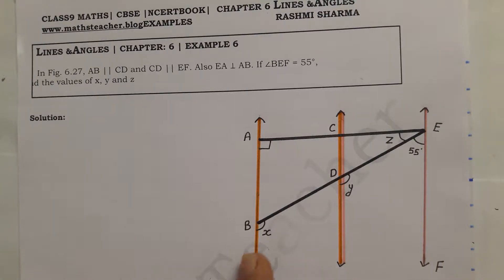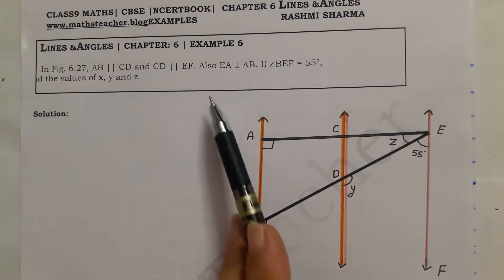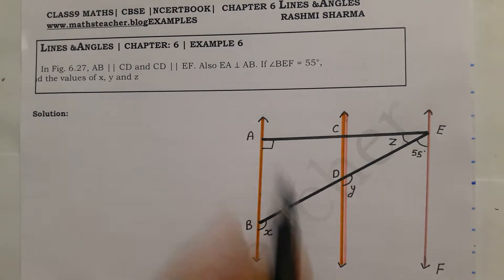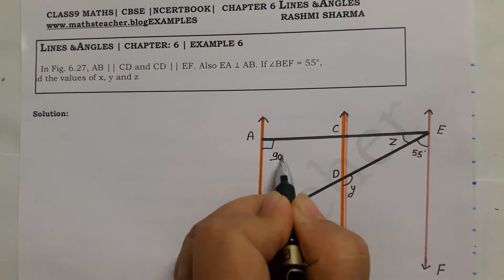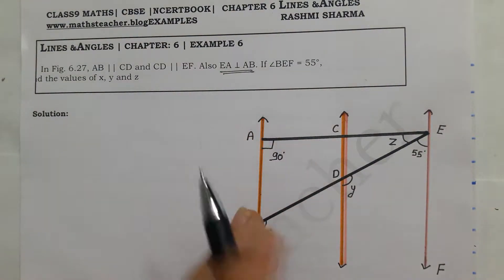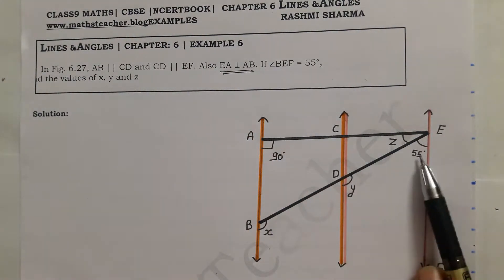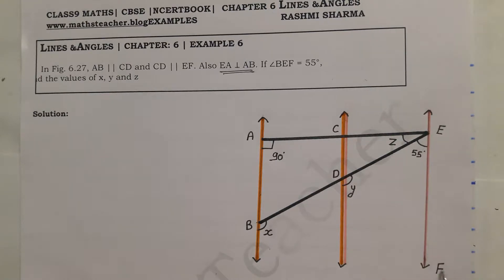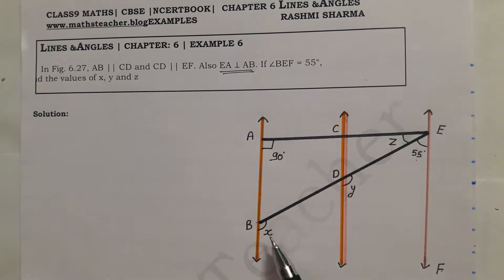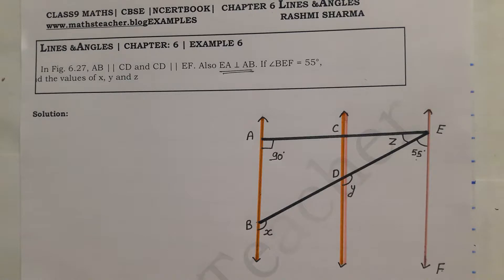Lines which are parallel to the same line — these two lines are parallel to the same line, so they will also be parallel to each other. Also, EA is perpendicular to AB, meaning the angle is 90 degrees. This is not given in the question figure, but it means the angle is 90 degrees. And angle BEF is 55 degrees. Find the values of x, y, and z.